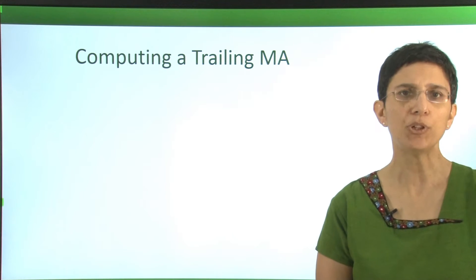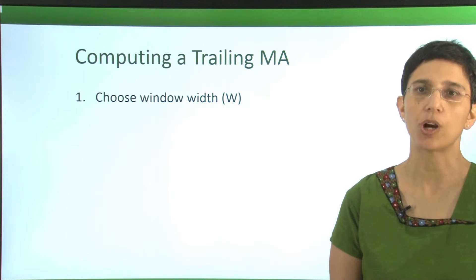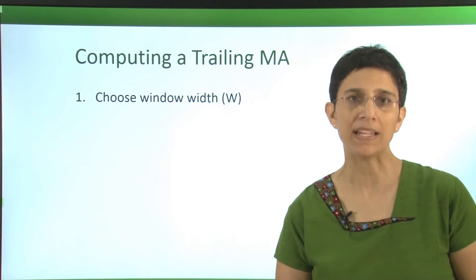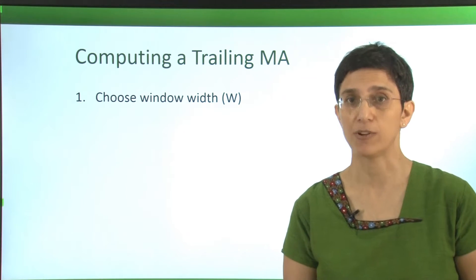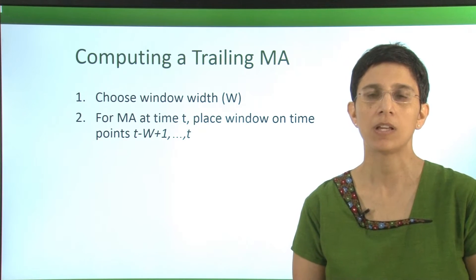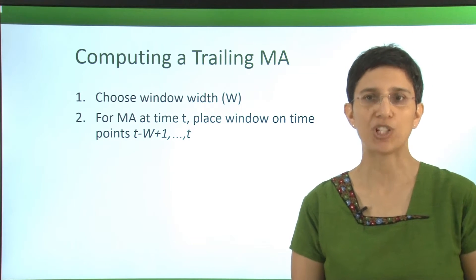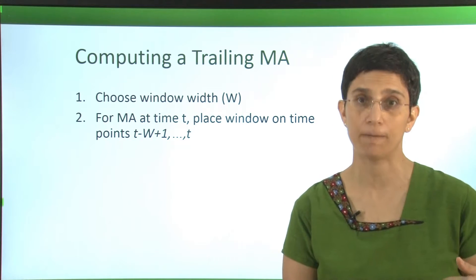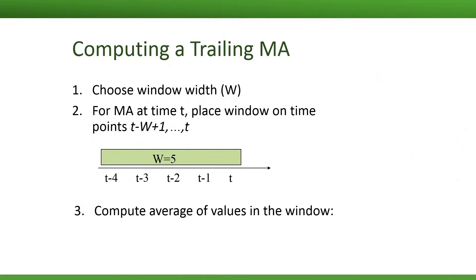Let's see how to compute a trailing moving average. First, we choose our window width. The window width will depend on different patterns in the series and on how much we want to smooth. Then, for a moving average at time t, we place our window on time points t and back. Lastly, we compute the average of values in the window — simply the sum of values divided by the window width.